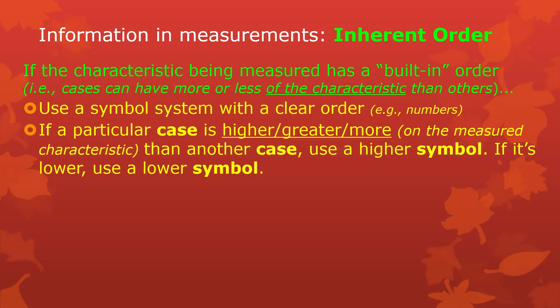So numbers are pretty nice. If a particular case is higher or has more of the characteristic than another case — with attractiveness, if the third man is more attractive than the second man, the third man should get a symbol that means 'more.' Maybe he gets a 7 and the previous person only got a 6. If it's lower, use a lower symbol. I'm using a slightly complicated way of describing this, but you'll see why we need to break it down so carefully later.